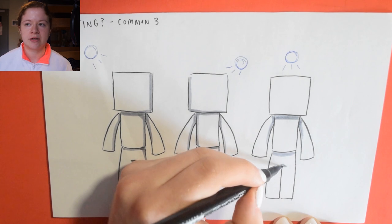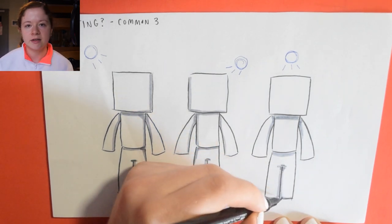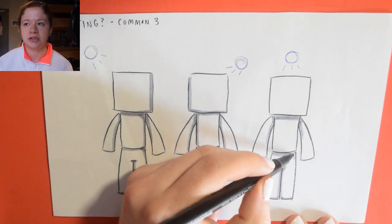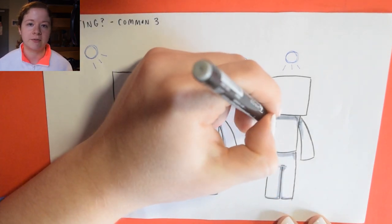Certain places that tend to have more shadows than others is going to be the inner arms, the inner legs, and the neck because those places are naturally more sunk into the character and thus are going to be harder to hit with light.